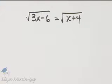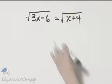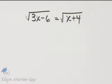How do we solve this radical equation? If possible, isolate a radical. As a matter of fact, both of these radicals are isolated. In other words, they're by themselves on a side of the equation.